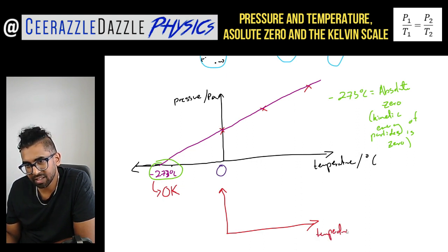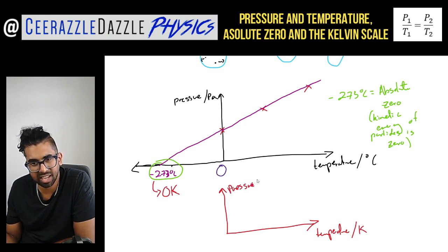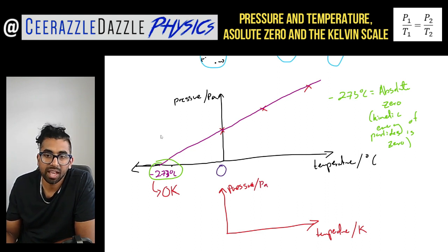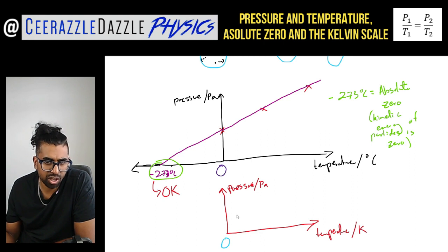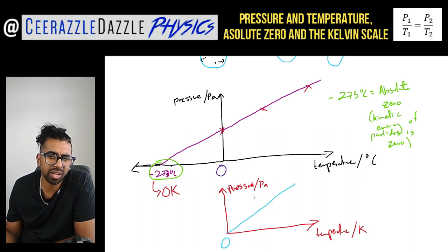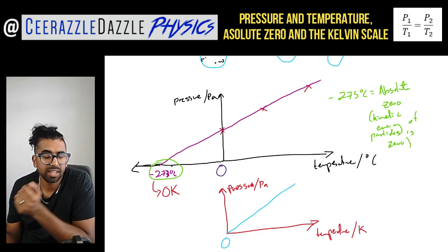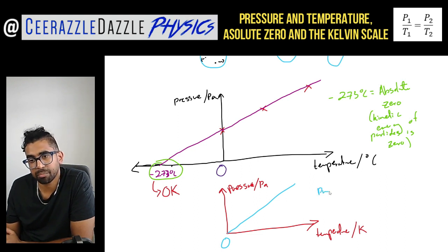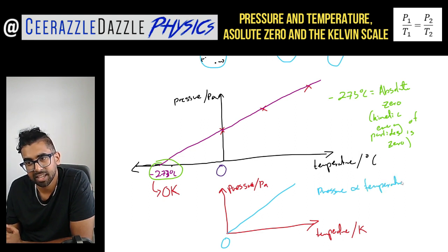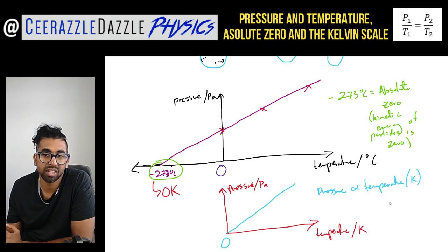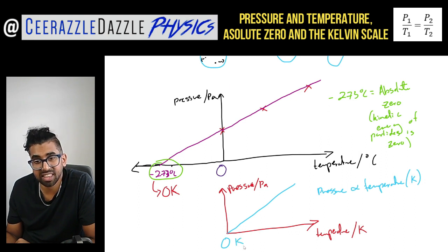We can now plot a new graph with temperature in Kelvin on the x-axis and pressure in Pascals on the y-axis. At zero Kelvin the pressure is zero, and the graph passes through the origin. We can now say that pressure is directly proportional to temperature when temperature is measured in Kelvin. If you use degrees Celsius it won't be directly proportional, but with Kelvin, at zero Kelvin the pressure is zero.